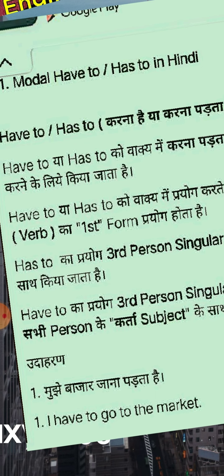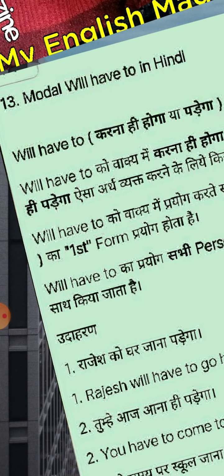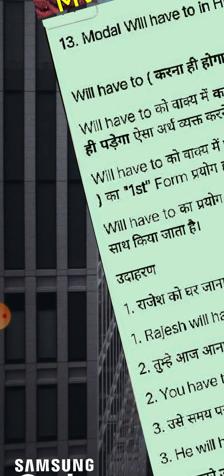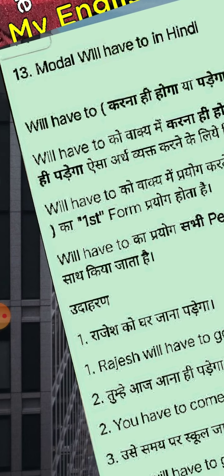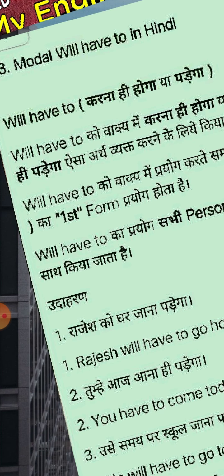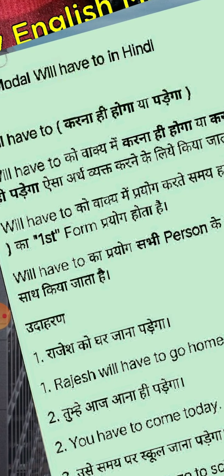One example I give to you. अब मैं आपको समझाऊंगी will have to — करना ही होगा, या करना ही पड़ेगा. Will have to, it is also a modal verb. Will have to को sentence में करना ही होगा या करना ही पड़ेगा, इस meaning के साथ use किया जाता है.